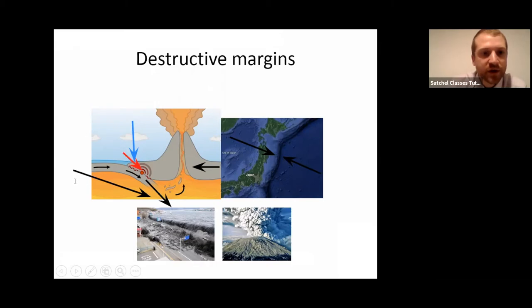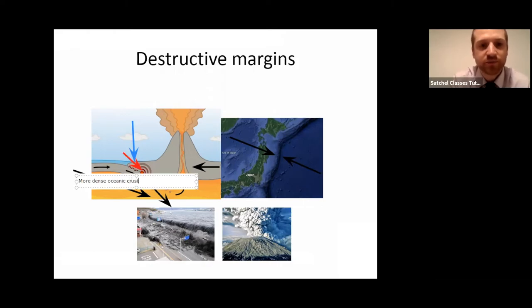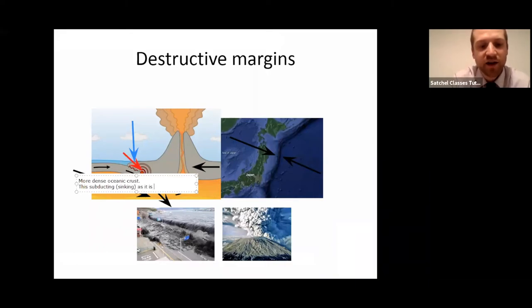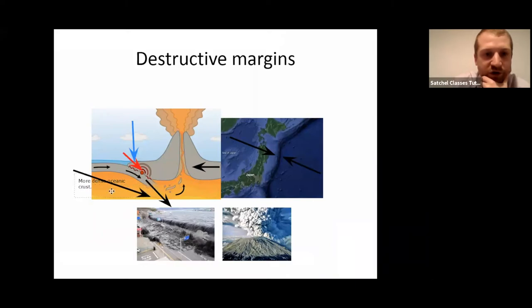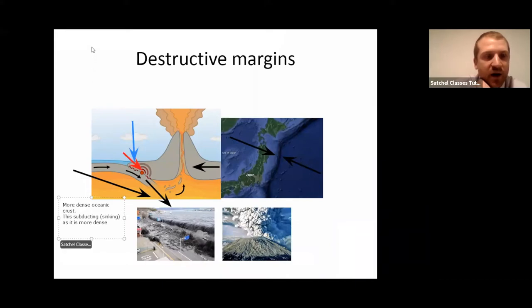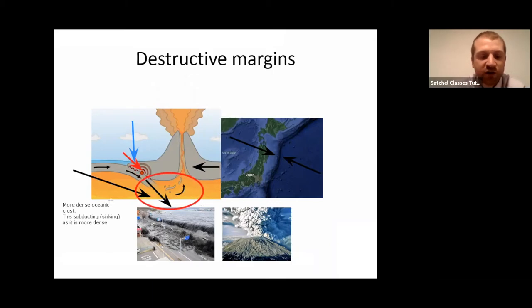On one side we've got our heavier, more dense oceanic crust. This is subducting — which is another word for sinking underneath — because it is more dense. As it sinks under, it goes into the hot magma or the hot mantle, and at that point it vanishes — it is transformed back into less dense magma, which will rise up into a volcano's magma chamber and lead to an eruption.